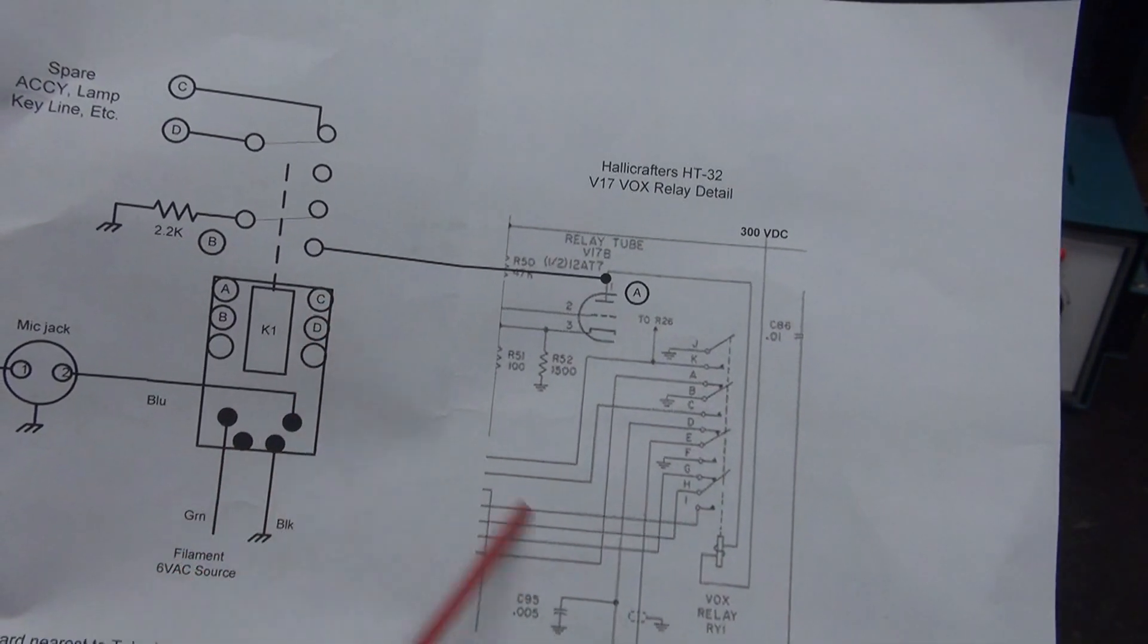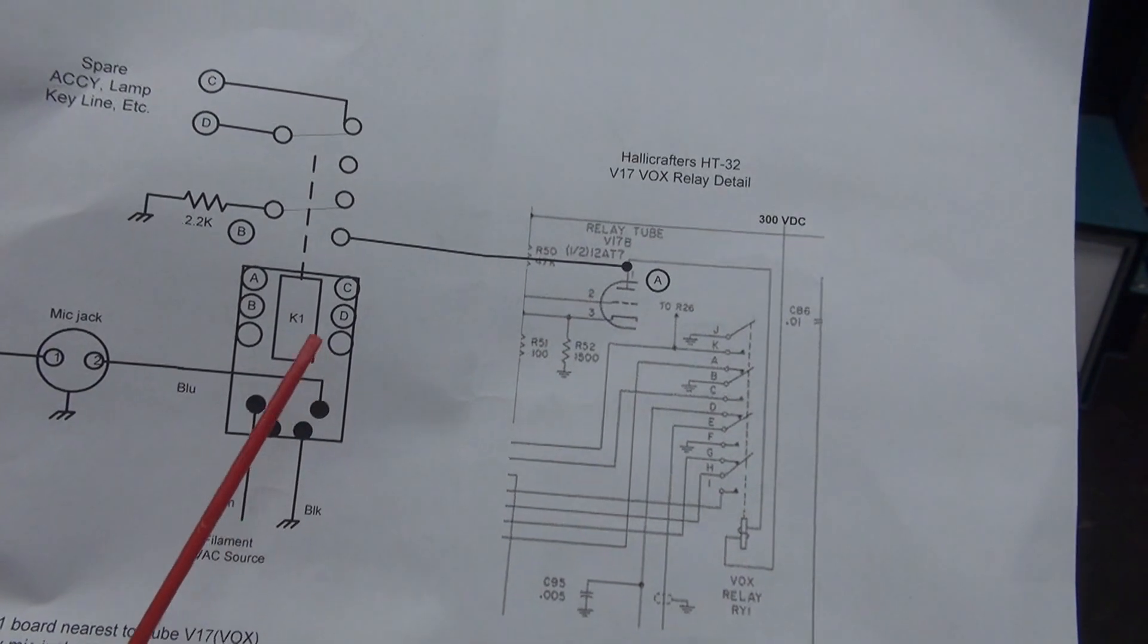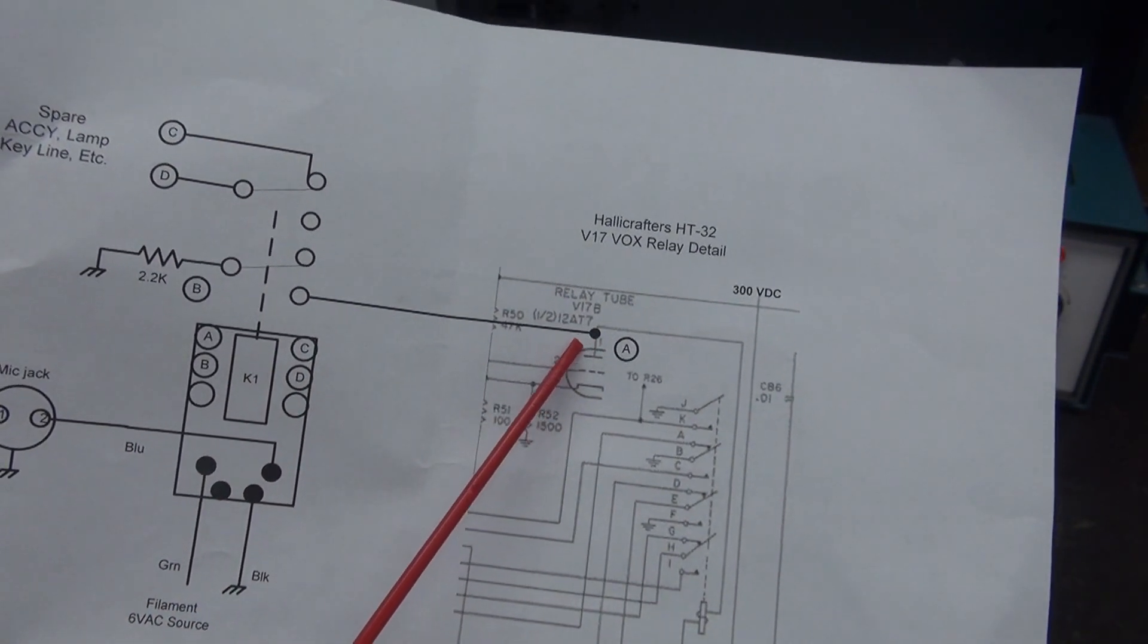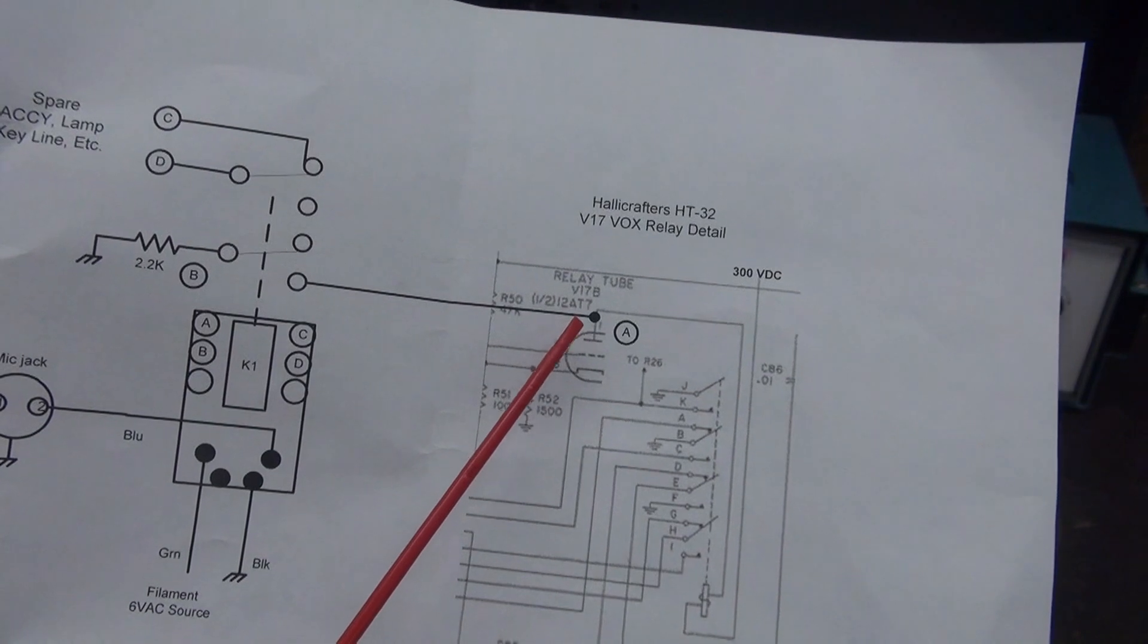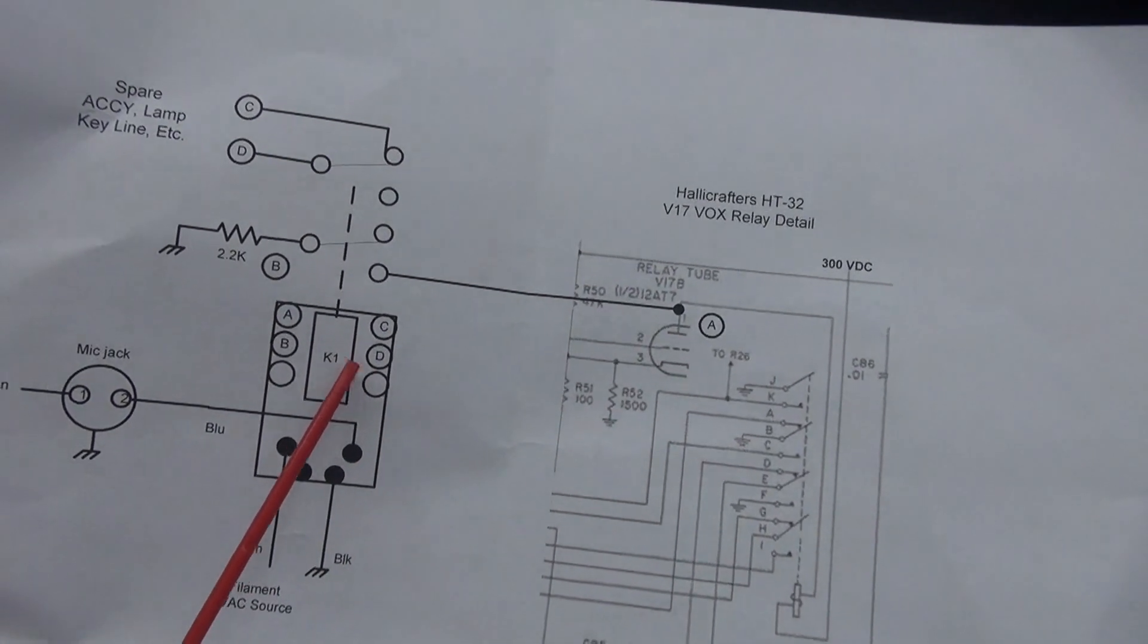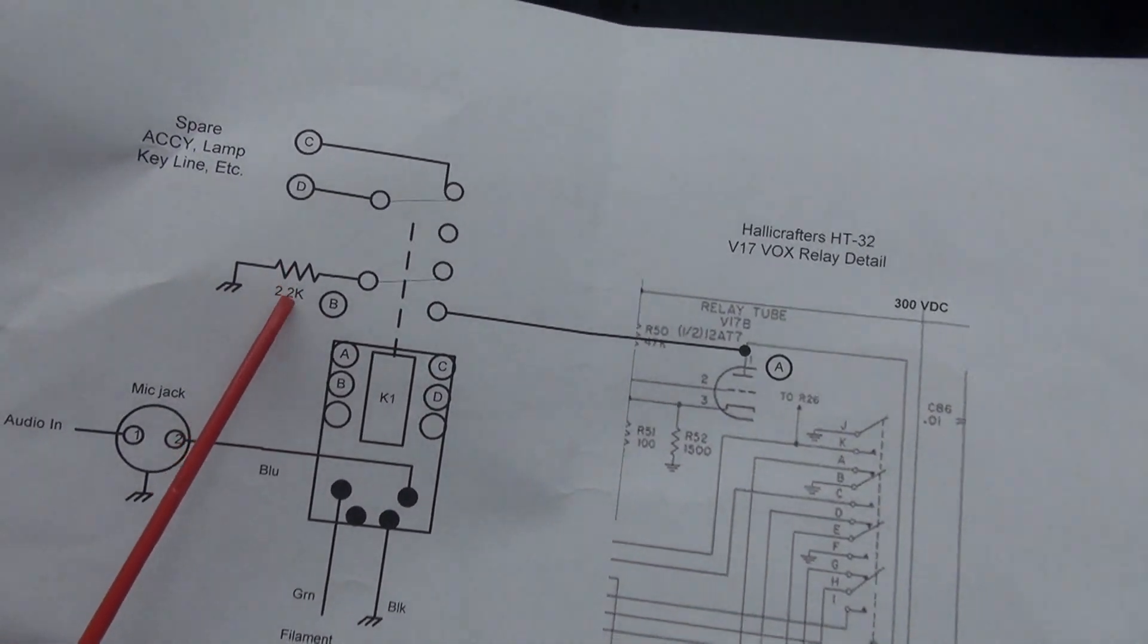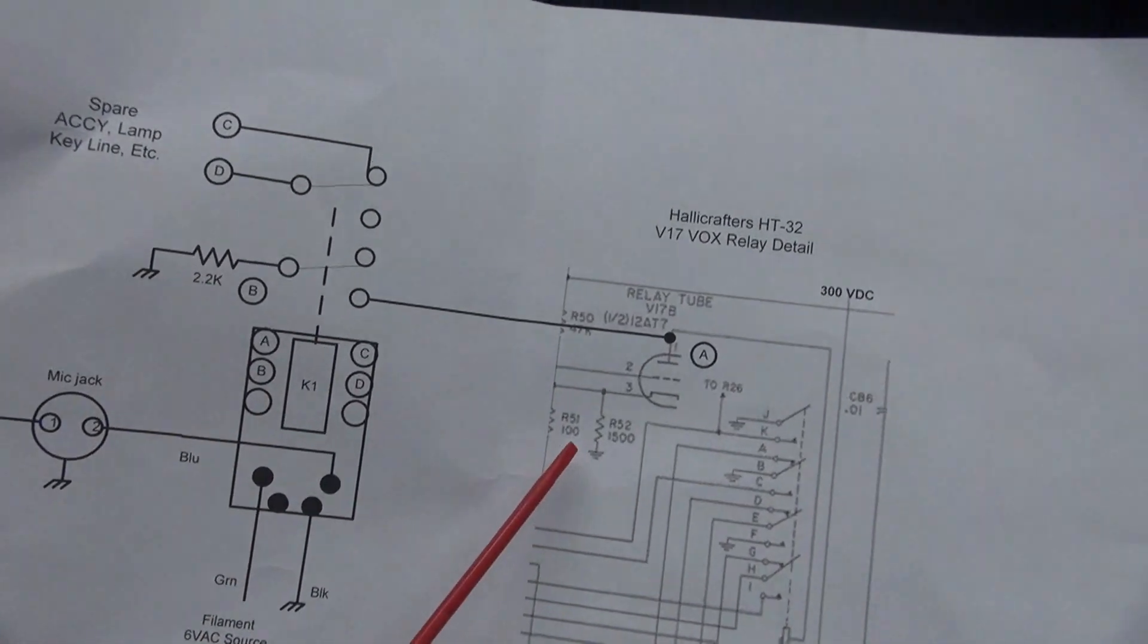So to accomplish the same thing with my board, I'm simply going to connect to pin one of that tube and the K1 relay is going to pull it low with a little current limiting resistor like they have here.